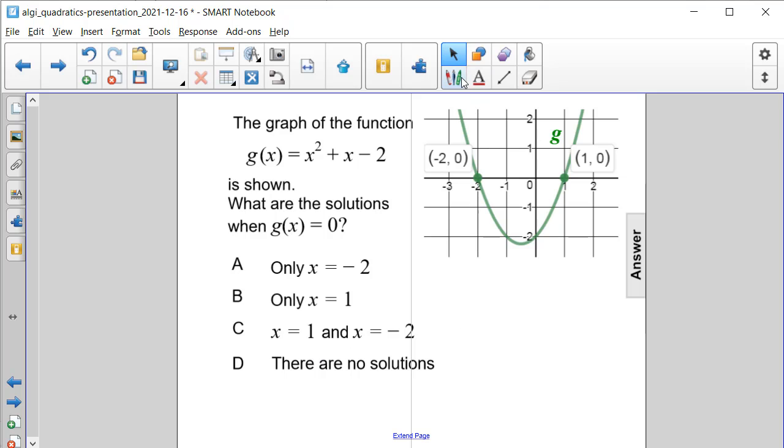Well, if we look at our graph, we're finding when g of x is equal to 0. That means when it's crossing the x-axis.